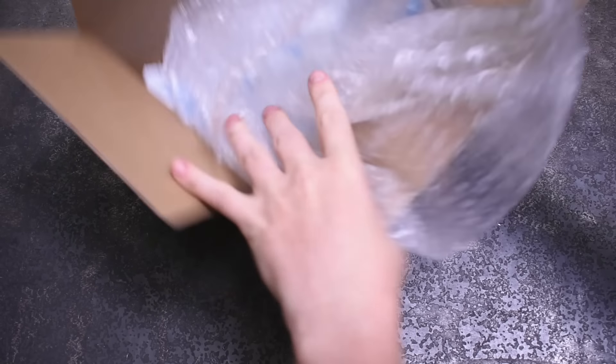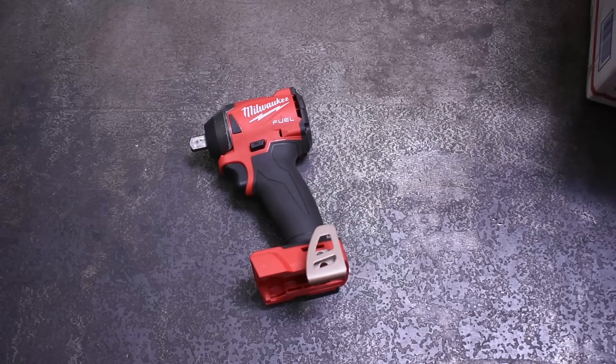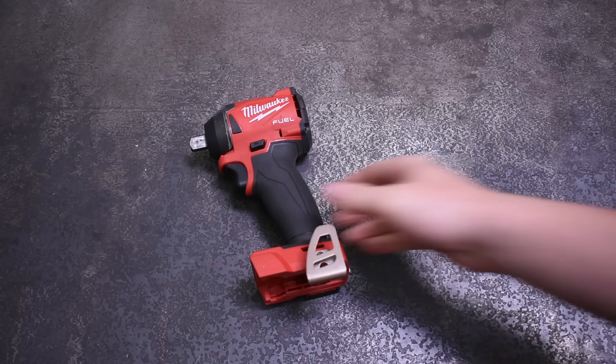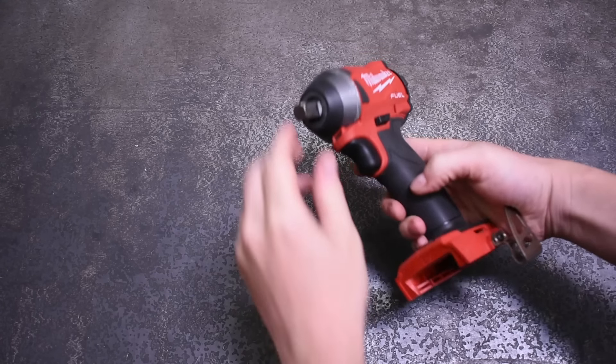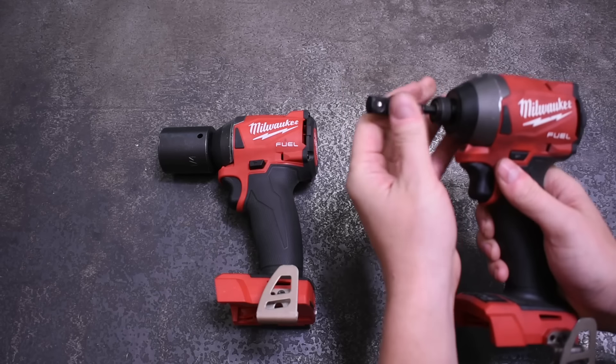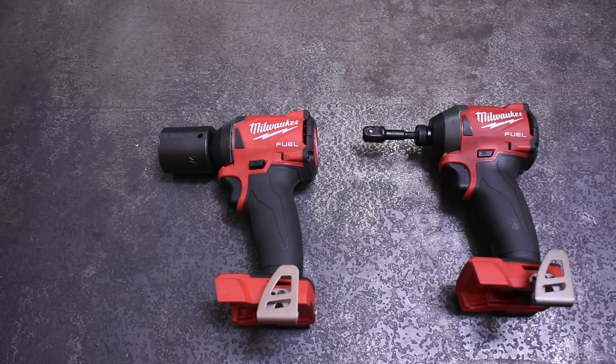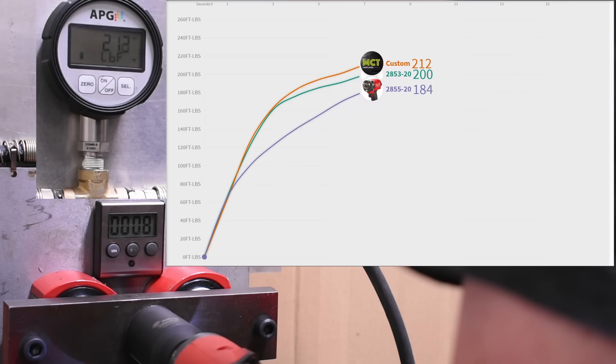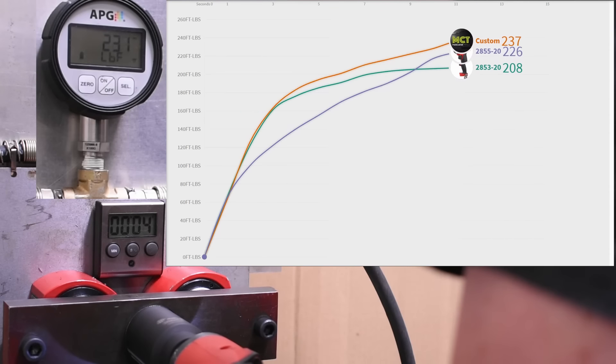Some time ago we tested the Frankenstein half-inch anvil swapped Gen 3 Milwaukee impact driver that Mancaver Tools cooked up, converting it from an impact driver that would normally use an adapter to run bolts and nuts, to an impact wrench. This made its form factor a much more attractive hip shooter and made it insanely powerful for its size, beating out the best Milwaukee can offer in compact impact wrenches.